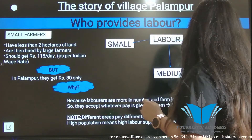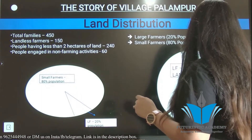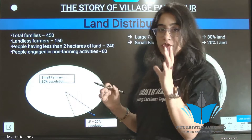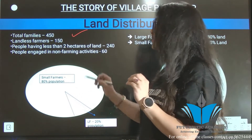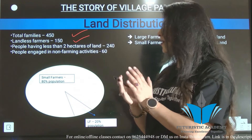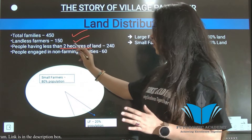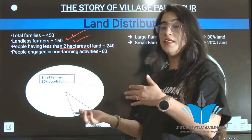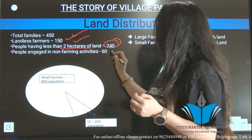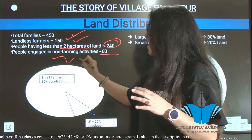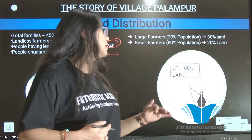Land distribution is very important, so listen carefully. The total families in Palampur were 450. Out of 450 families, 150 families were landless. Some people had less than 2 hectares of land. 240 families had up to 2 hectares of land, and 60 families were engaged in non-farming activities and earned money that way.